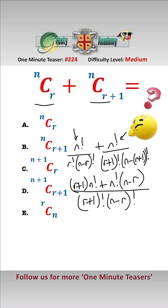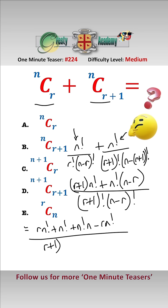Expanding all of this gives us R times N factorial plus N factorial plus N factorial times N minus R, all over R plus 1 factorial times N minus R factorial. The N factorial terms cancel appropriately.